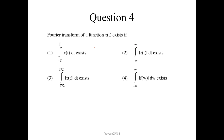Question number 4. The Fourier transform of a function x(t) exists if the integration between minus infinity to infinity of |x(t)| dt exists. So option 2 is the correct answer.